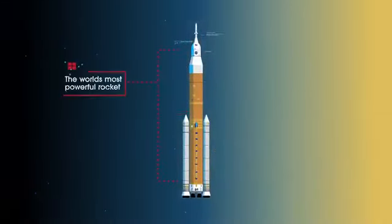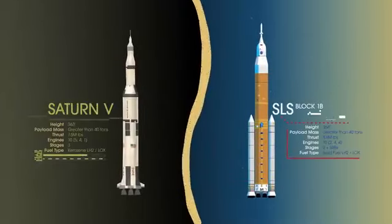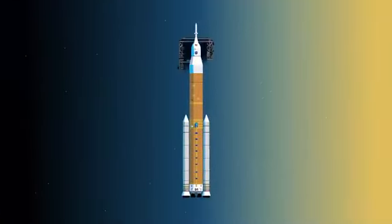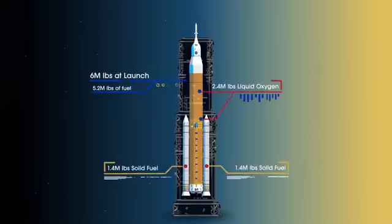Altogether, this is the world's most powerful rocket, and it exceeds the legendary Saturn V of the Apollo era in numerous ways. Sitting on the launch pad, the entire rocket, fully fueled, weighs just over 6 million pounds, 5.2 million of which is just the fuel.